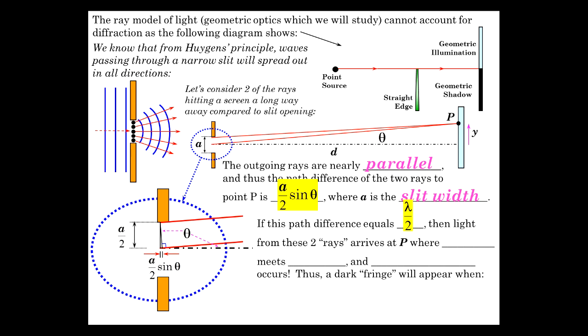But if it's a half a wavelength difference, crest doesn't meet crest, does it? Rather, crest meets trough. And if crest meets trough, you know there's destructive interference, cancellation. And if it's light, then cancellation produces a dark region. We call it a dark fringe. And that dark fringe will appear when the path difference.